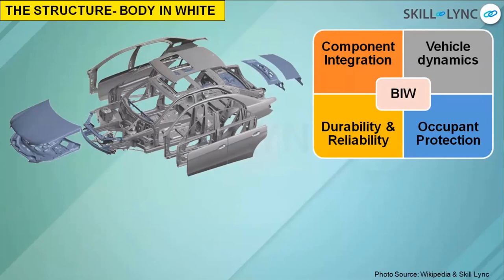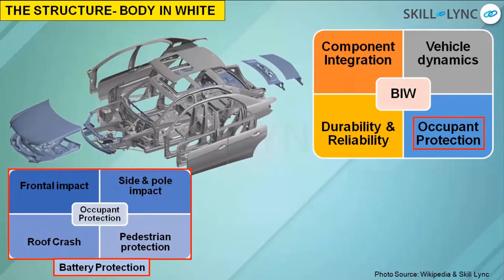The fourth and very important function is occupant protection. When you buy a vehicle and hit the road, there are very real chances of an accident however careful you may be. The body in white also performs the function of occupant protection. There are different types: frontal impact — head-on collision with a wall or another vehicle; side impact — somebody taking a U-turn and hitting the driver's side, passenger side, B-pillar area, or door area.